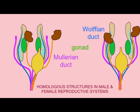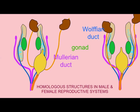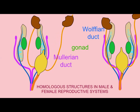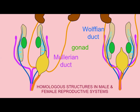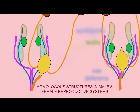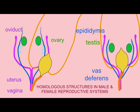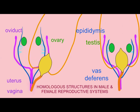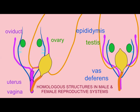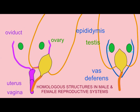For example, the clitoris and the penis result from the same embryonic tissue — they are simply given different hormones. The labia and the scrotal folds result from the same embryonic tissues, just given different hormones. The same would apply to male and female glands.